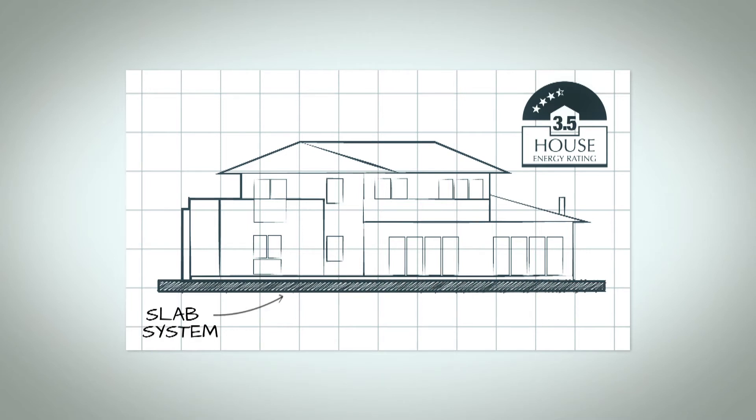We found that slab on ground was cheaper and faster to build while providing thermal coupling with the ground to improve the energy rating of the house. When we substituted the raised floor for a slab on ground, the energy rating jumped to 4.2 stars.